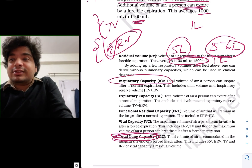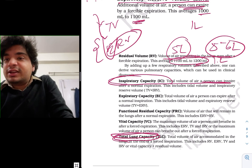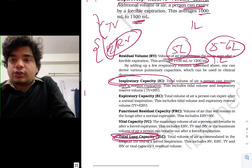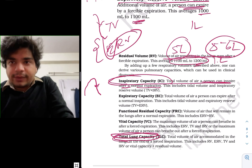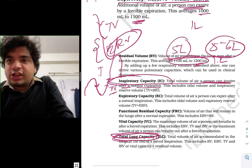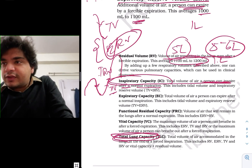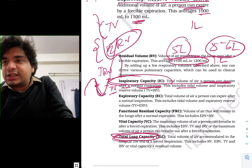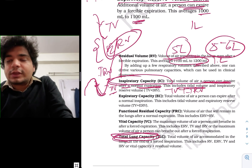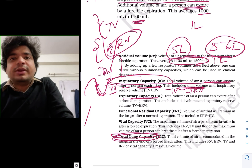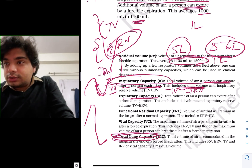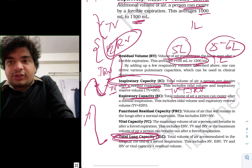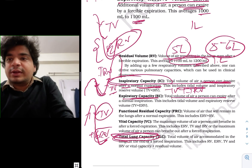Now let's discuss the capacities. Inspiratory capacity: the total amount of air a person can inspire after a normal expiration. After a normal expiration, you take the tidal volume and then the extra inspiratory reserve volume. So inspiratory capacity equals tidal volume plus inspiratory reserve volume. Expiratory capacity: after a normal inspiration, the maximum air you can expire — that is tidal volume plus expiratory reserve volume — makes up the expiratory capacity.